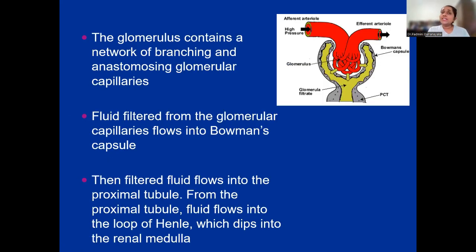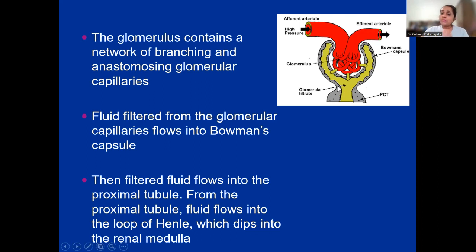The glomerulus contains a network of branching and anastomosing glomerular capillaries. From one end, it starts as the afferent arteriole, as shown in this picture, then divides into lots of glomerular capillaries, and joins to form the efferent arteriole. Fluid filtered from the glomerular capillaries enters the Bowman's capsule, then into the proximal tubule, flows into the loop of Henle, then to the distal convoluted tubule, and so on.